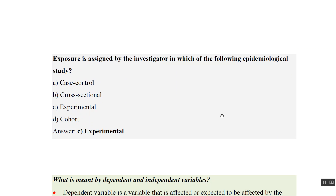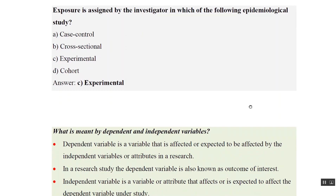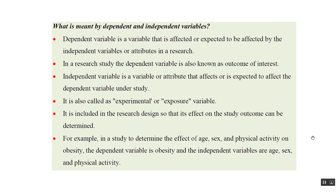Exposure is assigned by the investigator in experimental study designs, examples of which are randomized or non-randomized control trials. Now, two terms we should understand clearly: the dependent variable is a variable that is affected or expected to be affected by the independent variable — it is also known as the outcome. The independent variable is the factor which affects the dependent variable or outcome, and is known as exposure. So dependent variable means outcome, and independent variable means exposure — an exposure may or may not lead to outcome.